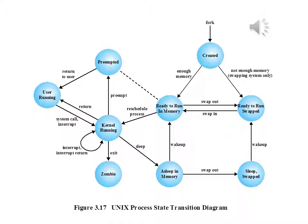Preemption can only occur when a process is about to move from kernel mode to user mode. While a process is running in kernel mode, it may not be preempted. This makes UNIX unsuitable for real-time processing, which will be discussed later in the course.